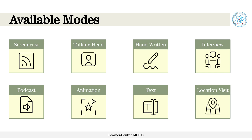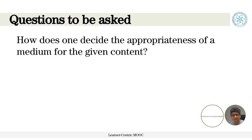When we have so many modes available, the point is: how do we decide the appropriateness of each medium before taking a call on what should be the medium for my LED? Let us assume you have content, you have the domain knowledge, and you are supposed to create a learning dialogue. You have finalized the content — it is correct, good, and impressive. You have also incorporated the reflection spot to make it a LED, so script-wise you are done. But the moment you decide to record it, there are so many mediums available.